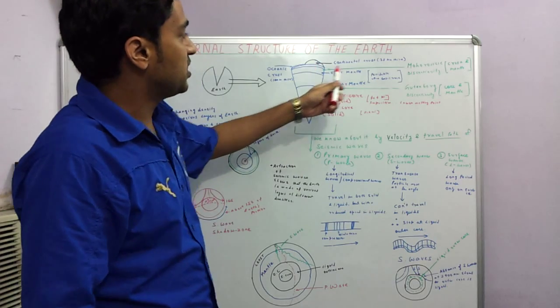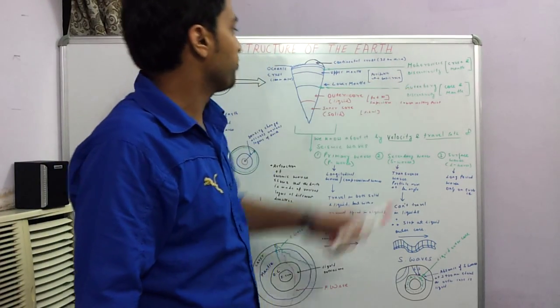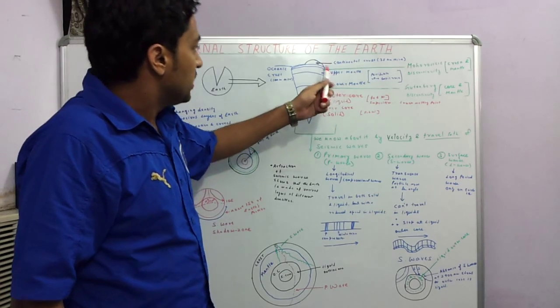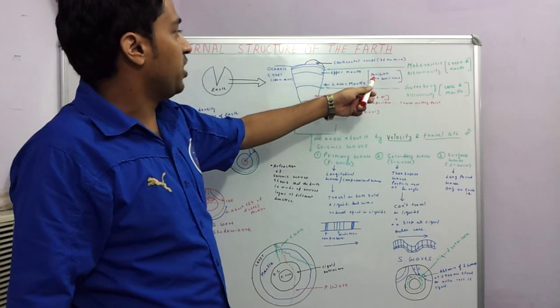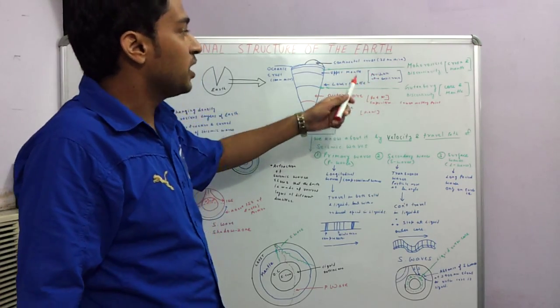Between these two is the Mohorovičić discontinuity. And the mantle is basically made of peridotite, which is an ultra basic rock.